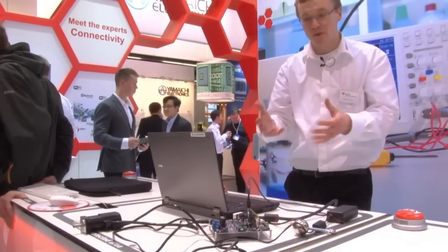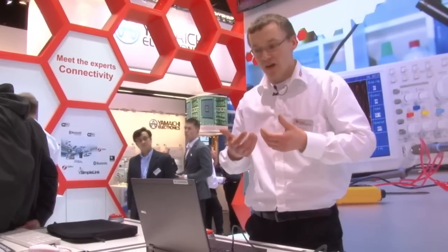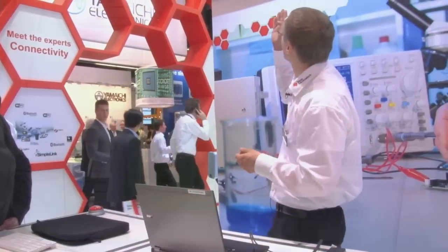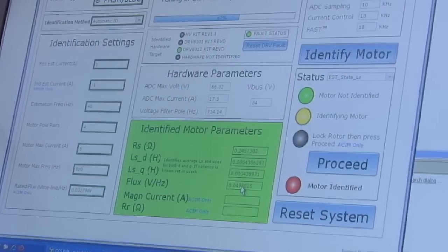Now I start the software algorithm that estimates the values I need for the software sensor to give you a proper angle. Now it's running for two minutes and then I have the motor parameters. As you see on the screen, the RS and the LD and Q and the flux values.